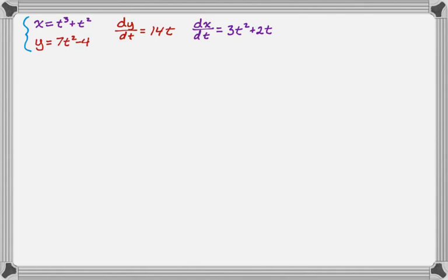And so that means that dy dx, we already found everything we need. So dy dx is dy dt, which is 14t, divided by dx dt, which is 3t squared plus 2t. Everything has a t in it, so to simplify things, when you're doing these, you pretty much always want to simplify as much as possible. I'm going to factor a t out and cancel it. So I get 14 over 3t plus 2.